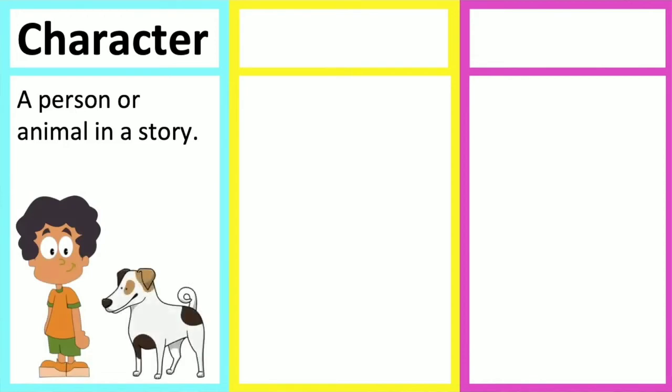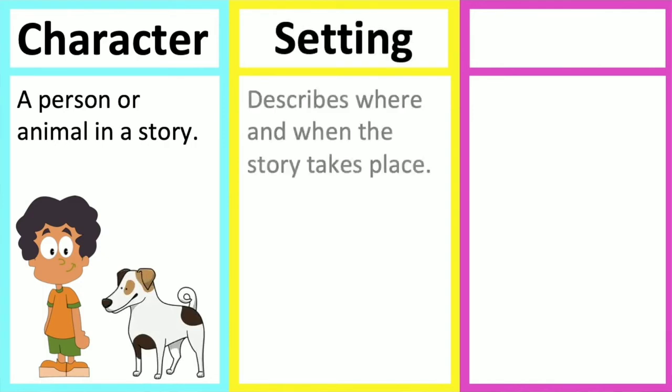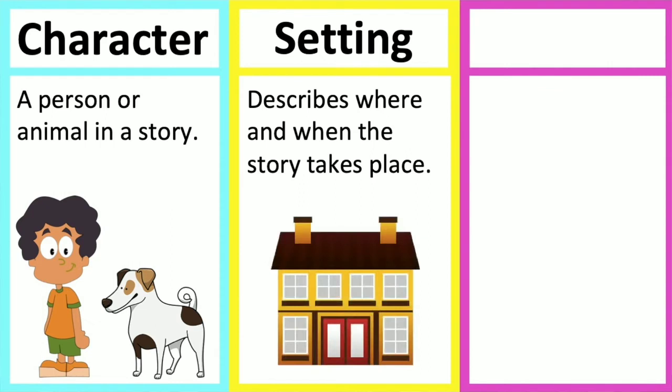The setting describes where and when a story takes place. The setting in a story is usually described well so the reader can visualize and understand where the story takes place. For example, settings include a house, school, park, market, etc.